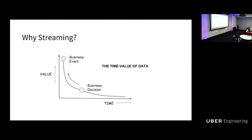This is especially important for Uber. Uber is an on-demand service. When you call a trip on the Uber app, you expect everything to happen immediately — you see the surge price immediately and get matched with a driver immediately. For example, for surge pricing, even three to five seconds is a very long time; it should happen within seconds. That's why streaming and real-time processing are especially important for Uber.